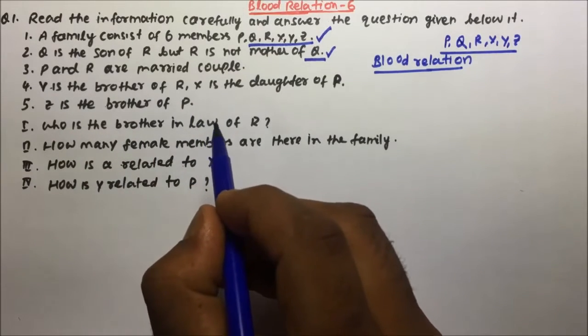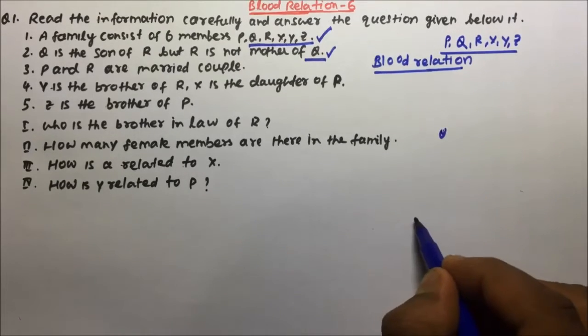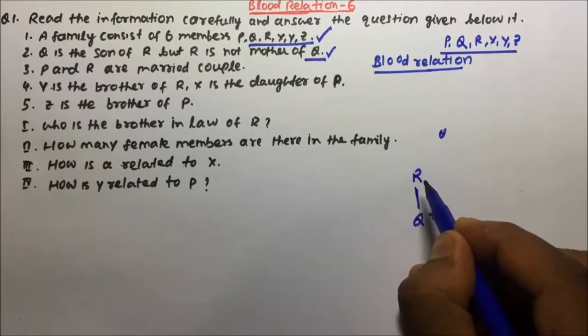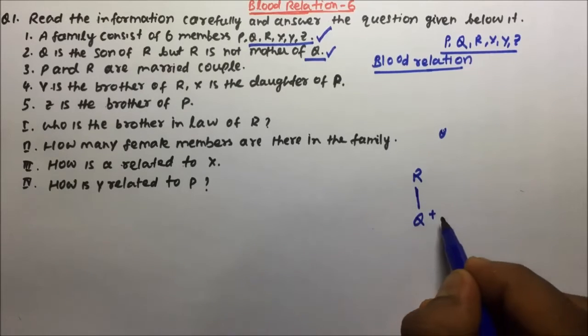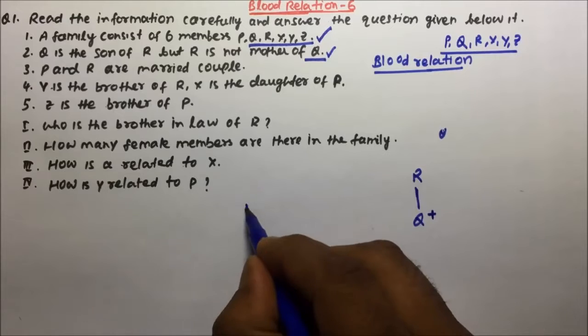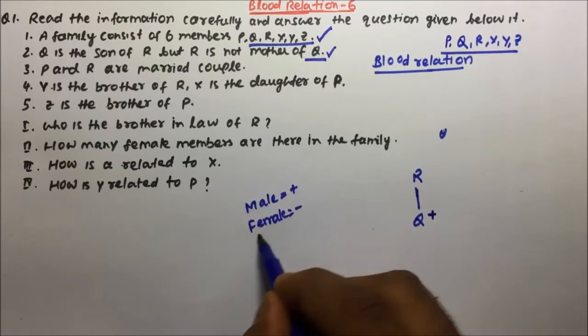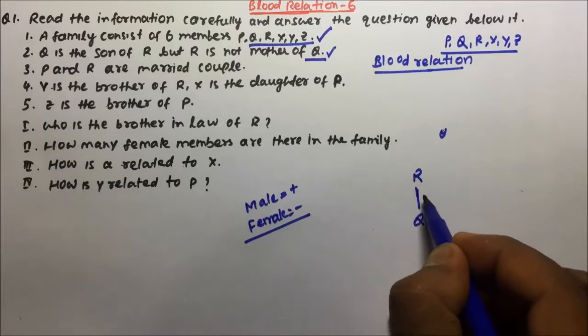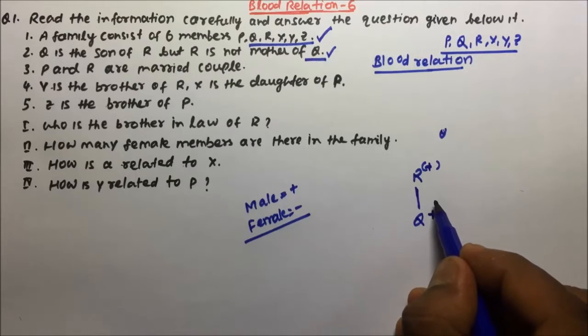Q is the son of R but R is not the mother of Q. This statement is a contradictory statement, but you have to very nicely write the blood relation tree. See, Q is the son of R, so if Q is the son then Q will be male and male we represent with plus sign. Male we represent with plus sign and female we represent with negative sign. So if R is not mother, then R will be father.